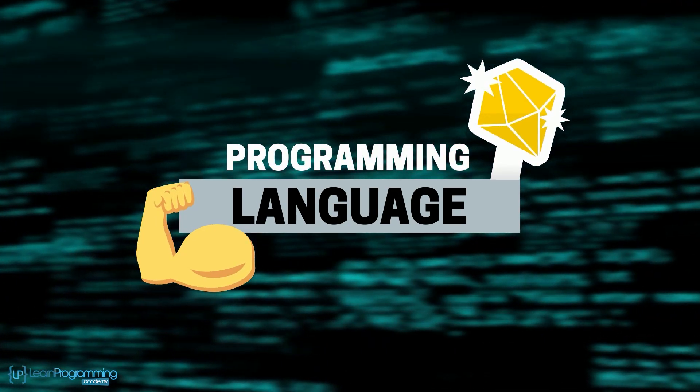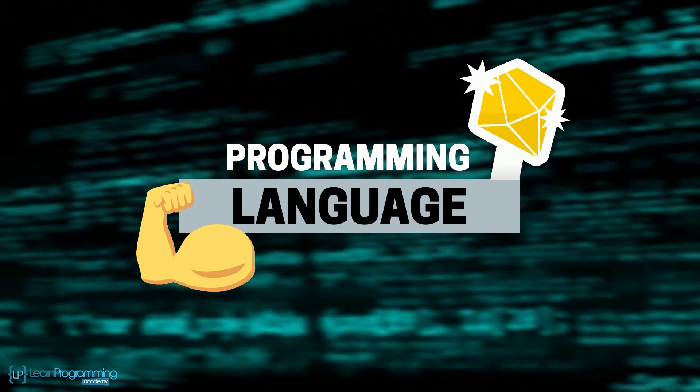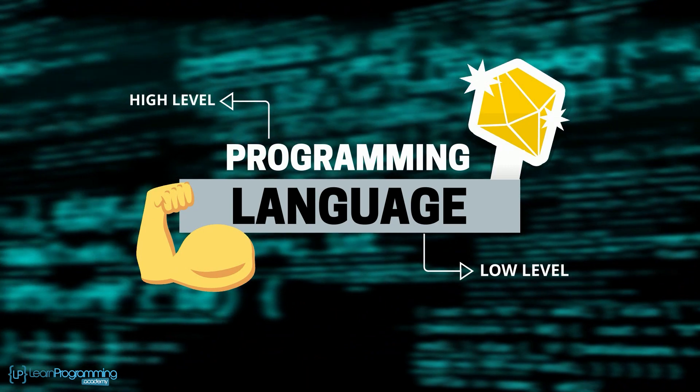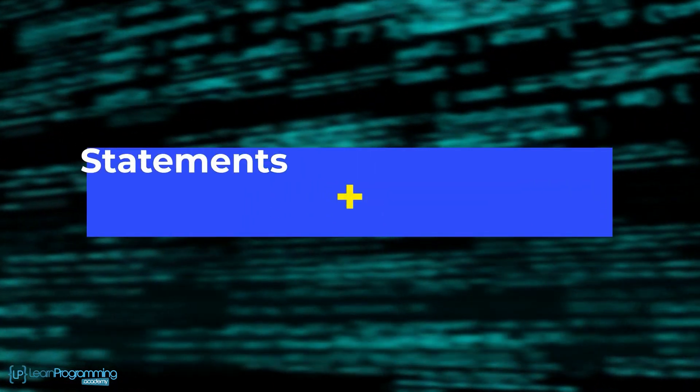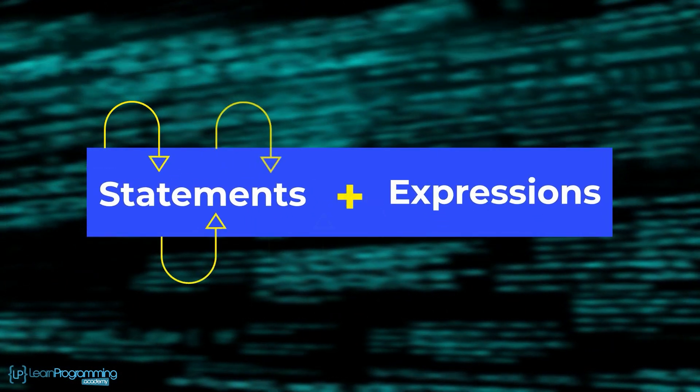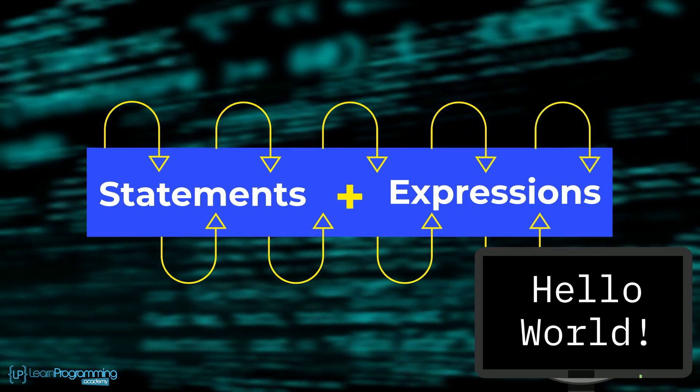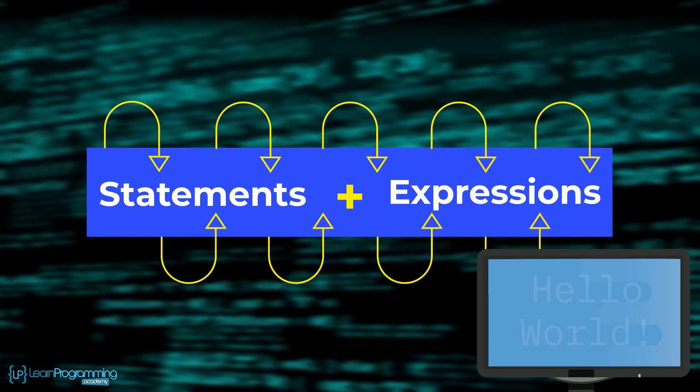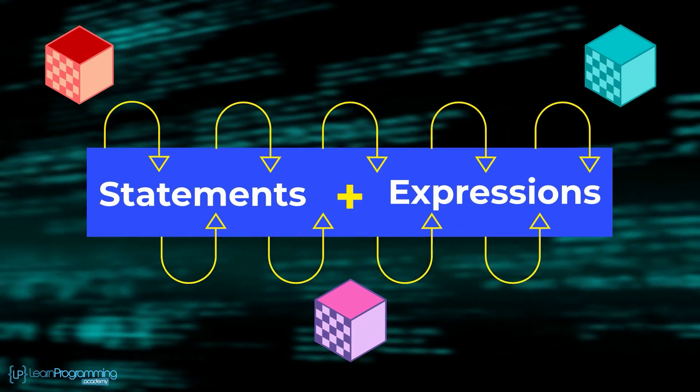The real power and beauty, if you will, of a programming language, whether low level or high, is in its ability to combine statements and expressions together in an orderly way so that the program can accomplish its goals. There's only three ways in which programming statements can be combined.